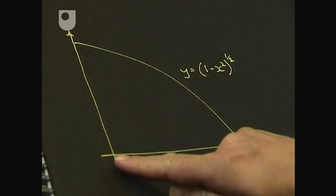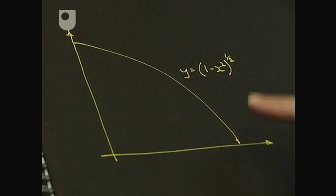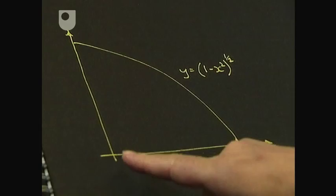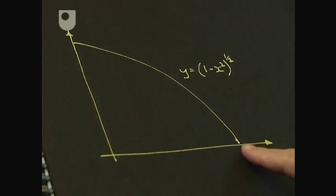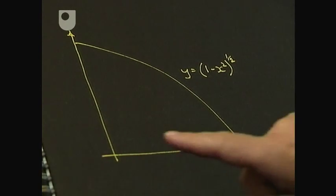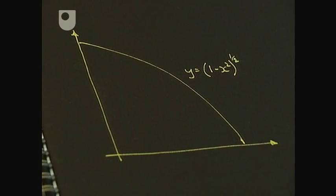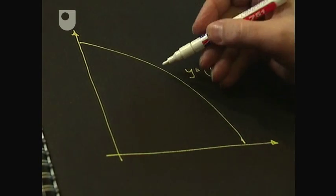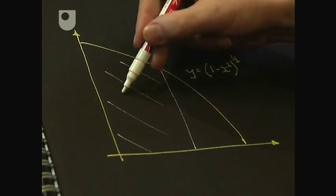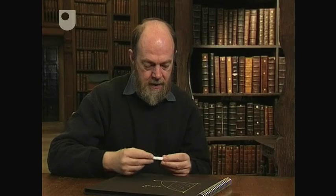Wallis had wanted to find the area under the curve with the equation y equals 1 minus x squared to the half, all the way from x equals 0 to x equals 1. Newton found he could do much better — he could find the area from x equals 0 to any value of x. He expressed the answer as an infinite series in powers of x, which is a remarkable thing to do.